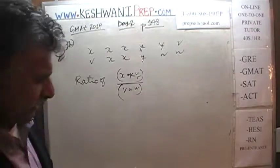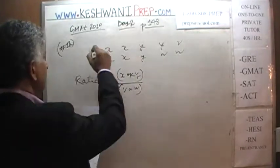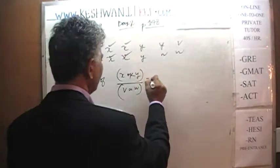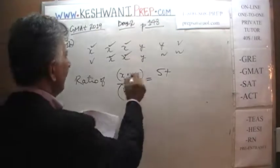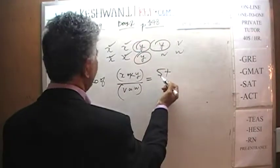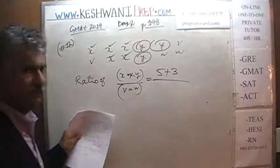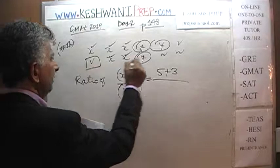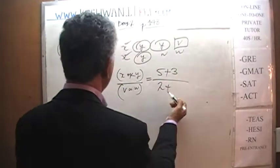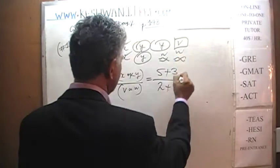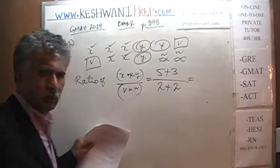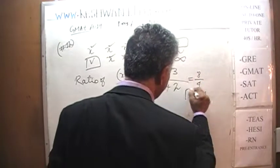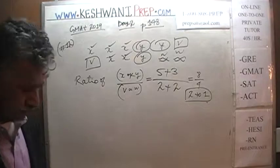Let's find out how many x's there are. We have one, two, three, four, five x's. Let's find out how many y's there are. I see one, two, three y's. How many v's do we have? We have one and two. And finally w's — I see one and two. Eight to four — the ratio is eight to four, or if you like, two to one.